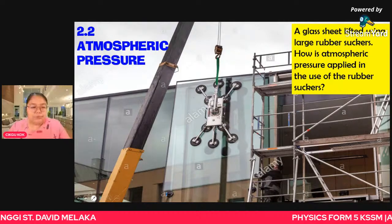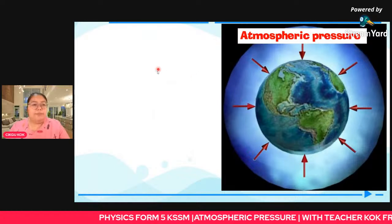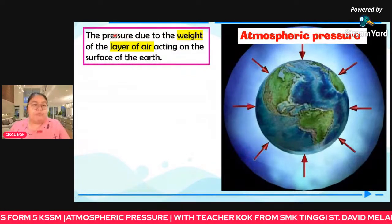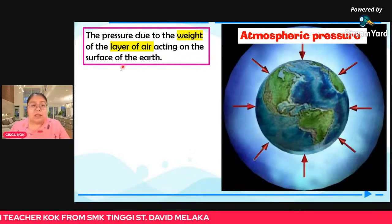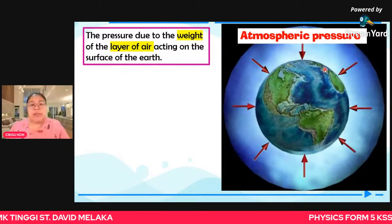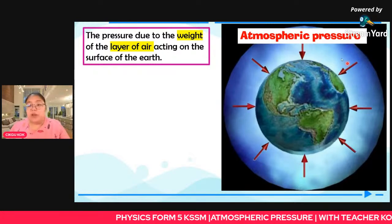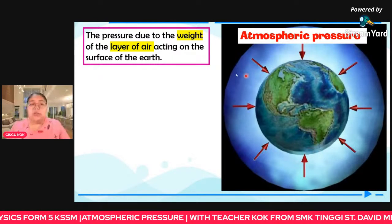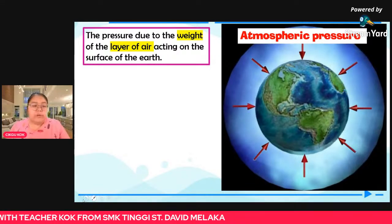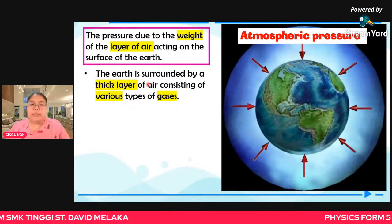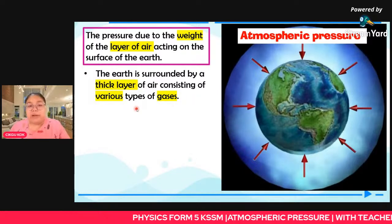Now let's see the definition of atmospheric pressure. Atmospheric pressure means the pressure due to the weight of the layer of air acting on the surface of the earth. The air also has weight surrounding the earth. Because the air has weight, it exerts pressure on the surface of the earth. So this is what we call atmospheric pressure — caused by the air layer of the earth.